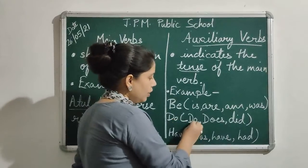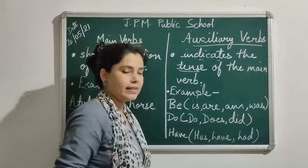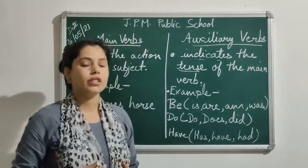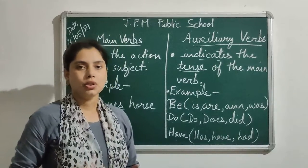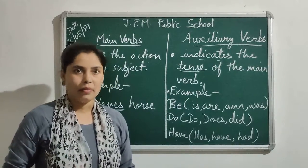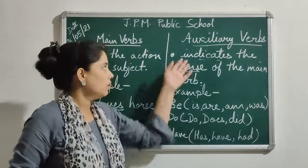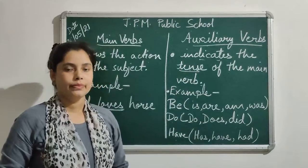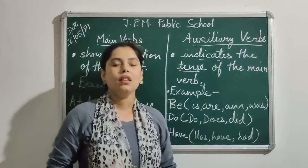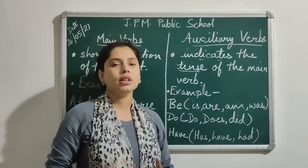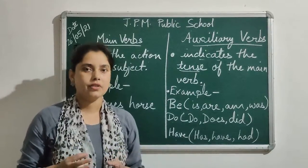'Do' consists of: do, does, did. 'Have' consists of: has, have, had. Other auxiliary verbs are: will, shall, would, should, can, could, may, might, and ought to. All these are different kinds of auxiliary verbs, which are used with the main verbs to tell the tense of the main verb and indicate the tense of a particular sentence.